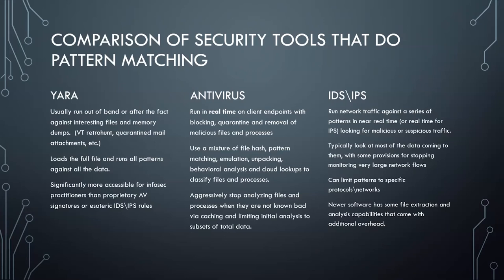Then there's IDS and IPS — think Suricata or Snort. These run against network traffic either in real time for IPS because they can block, or near-real time for IDS because they're running out of band. IDS is looking at almost all of the data, whereas antivirus tries to minimize the amount of data it looks at.